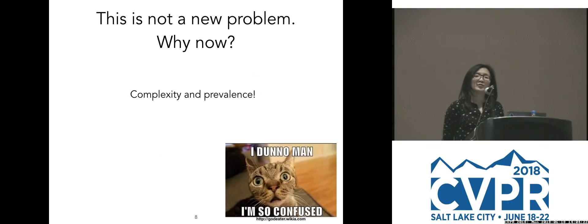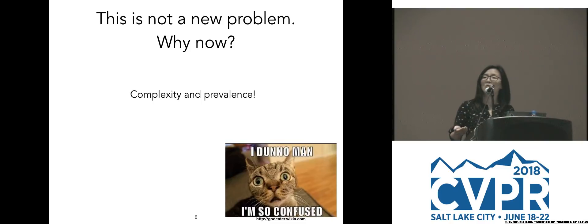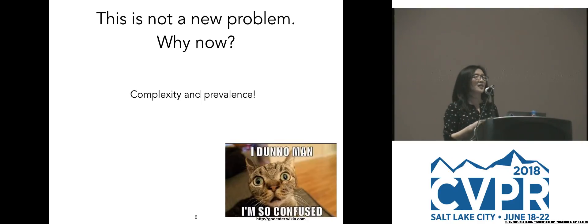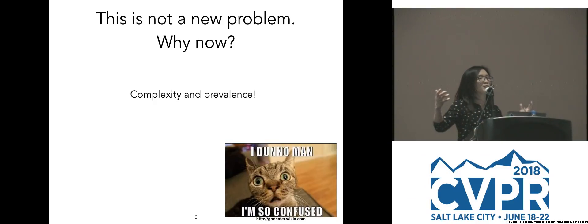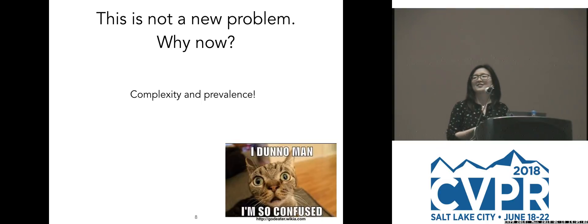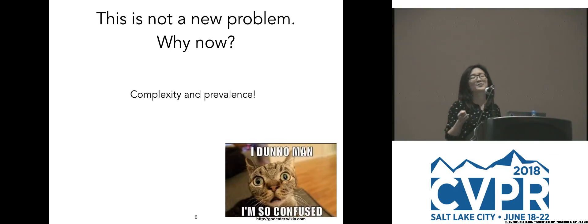It's also important to note that this is not a new problem. Expert systems in the 80s and lots of complex systems before that already identified that communicating something complex to humans is hard. So why now? What's different now? Two things: complexity and prevalence. We have a lot of data, a lot of computers, they're cheaper than ever. We use these computers to increasingly increase the complexity of the models we can use. And we use these complex models to do a lot of things — it's hard to go one day without interacting with something powered by machine learning.